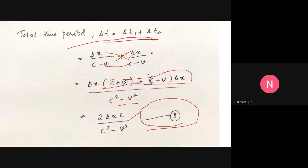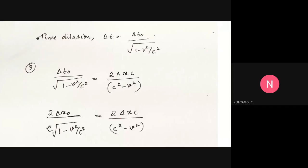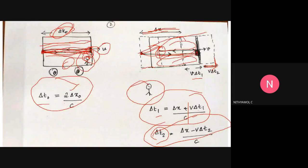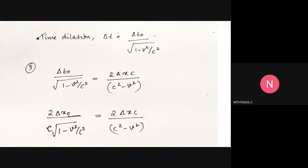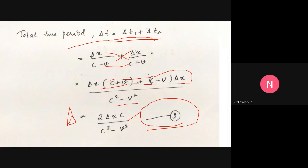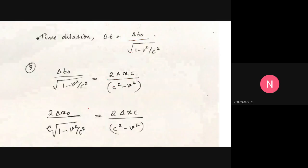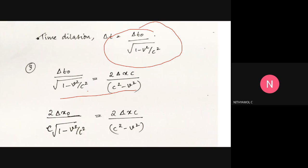The observer inside the moving train measures the proper time delta t0, and delta t0 equals 2*delta_x0/c. Now using time dilation, delta t equals delta t0 divided by the square root of (1 - v²/c²). So delta t0 divided by sqrt(1 - v²/c²) equals 2*delta_x*c divided by (c² - v²).